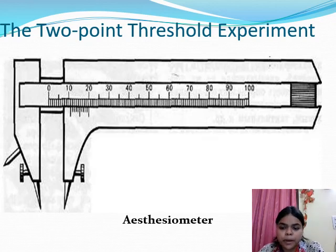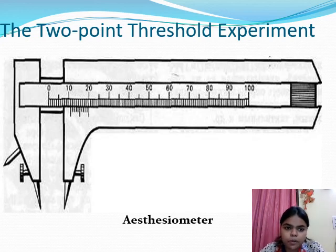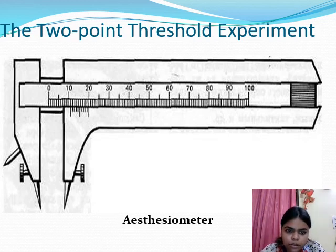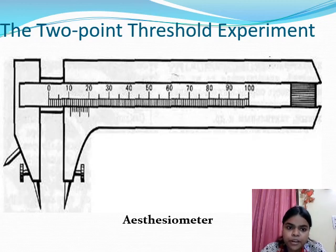Now, moving to the practical — the two-point threshold practical. The apparatus used is the esthesiometer. We use this for assessing the two-point threshold of the subject. As you can see, the esthesiometer has a scale on it, with which you can manipulate and change the distance. Towards one end, it has two points. It also has circular screws at the end, so you can adjust the scale.